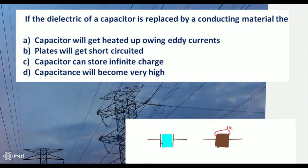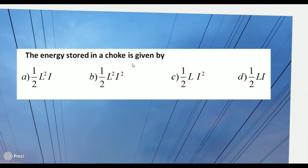In a capacitor, the dielectric separates the plates. If replaced by a conductor, the capacitor becomes completely conductive and the plates get short-circuited. The answer is: plates will get short-circuited.